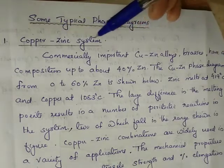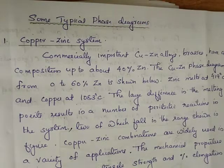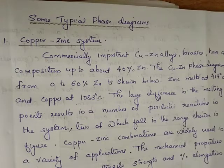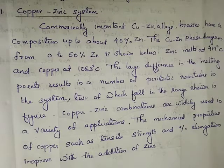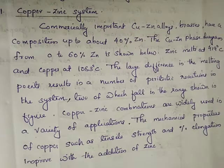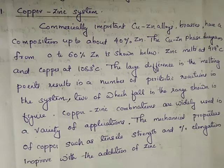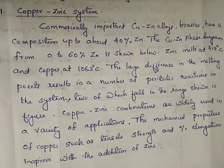The first one is the copper-zinc system — copper-zinc alloys. There are two important elements: copper and zinc. One phase diagram is constructed with the y-axis as temperature and the x-axis as the percentage of composition. The zinc composition is 0 to 60% in this graph. The melting point of zinc is 419 degrees Celsius and copper is 1083 degrees Celsius.